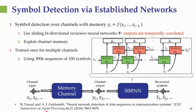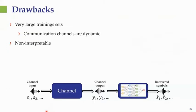In their work, they trained the network over multiple channels only once, using on the order of 30 million training samples with a highly parameterized neural network. They showed that for some scenarios, the resulting receiver comes quite close to the performance of the maximum likelihood sequence detector.